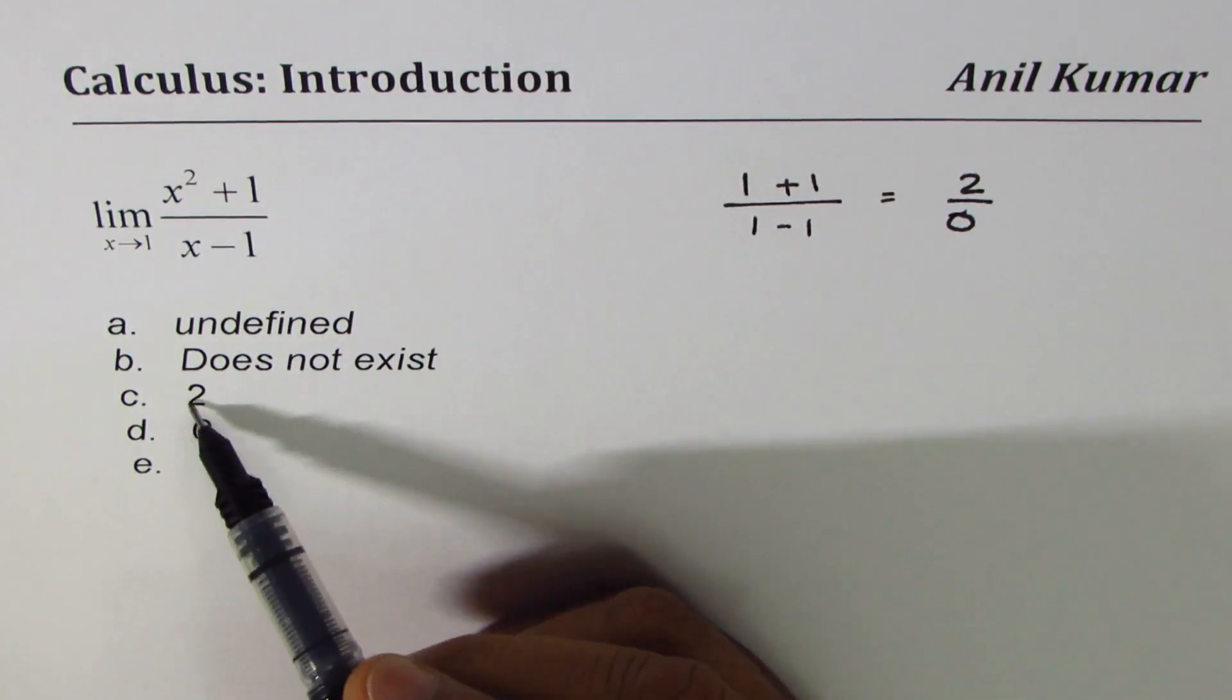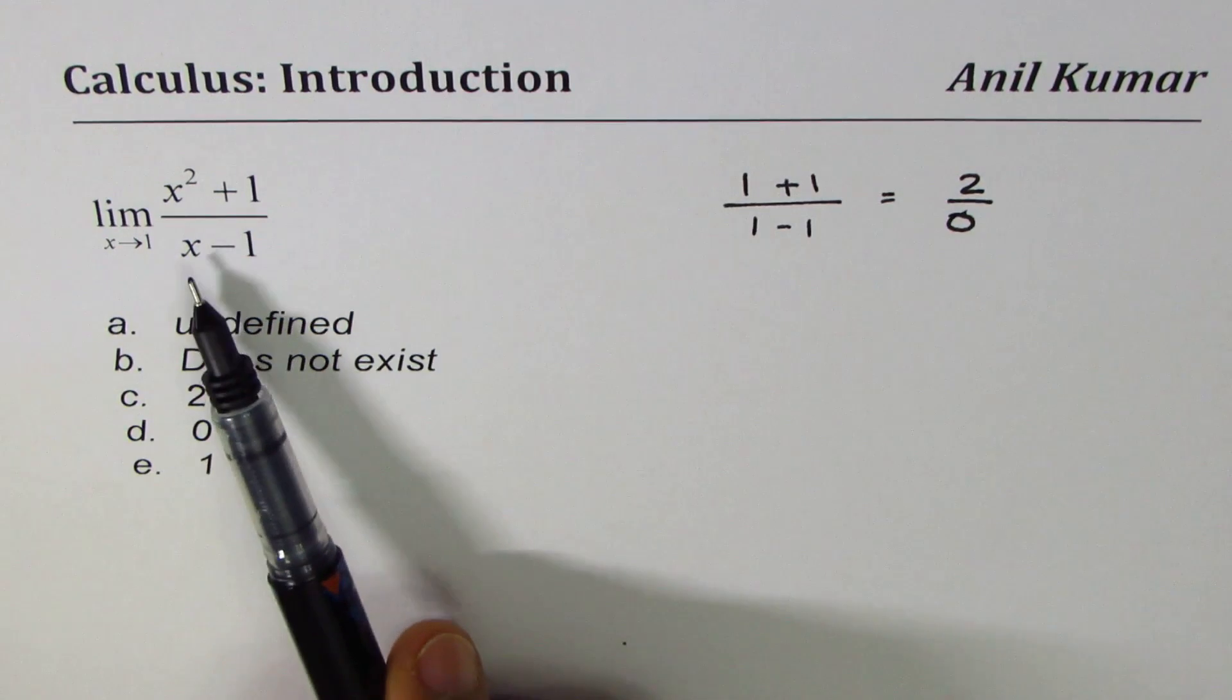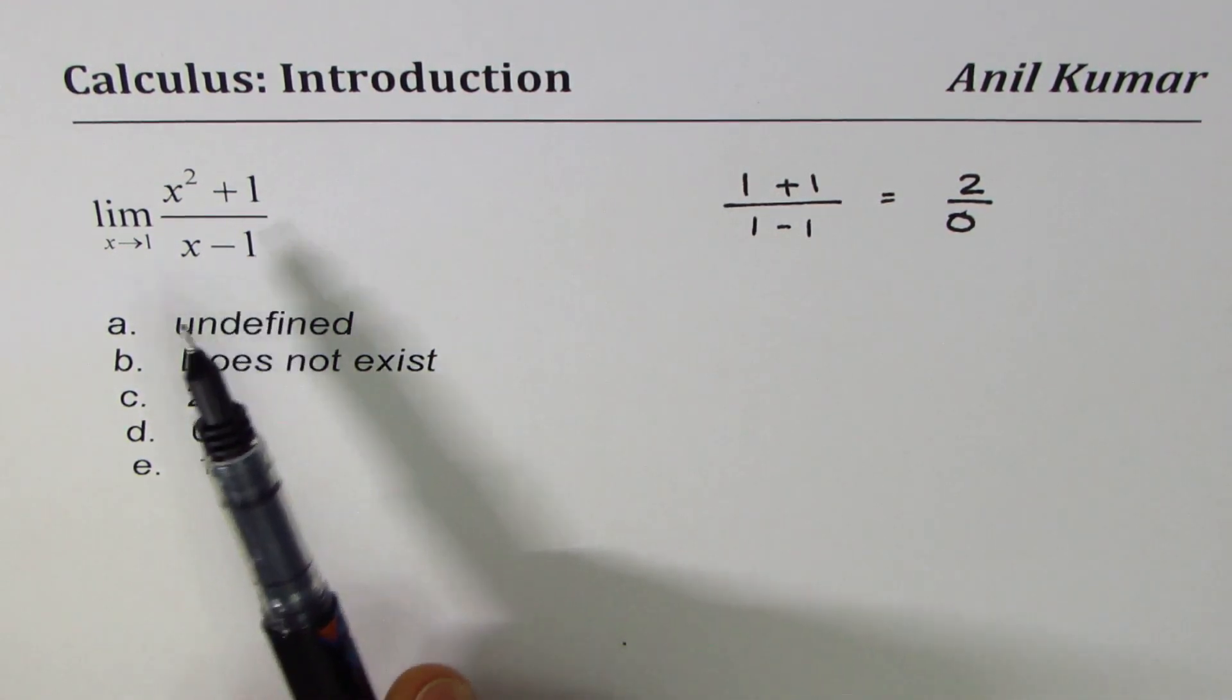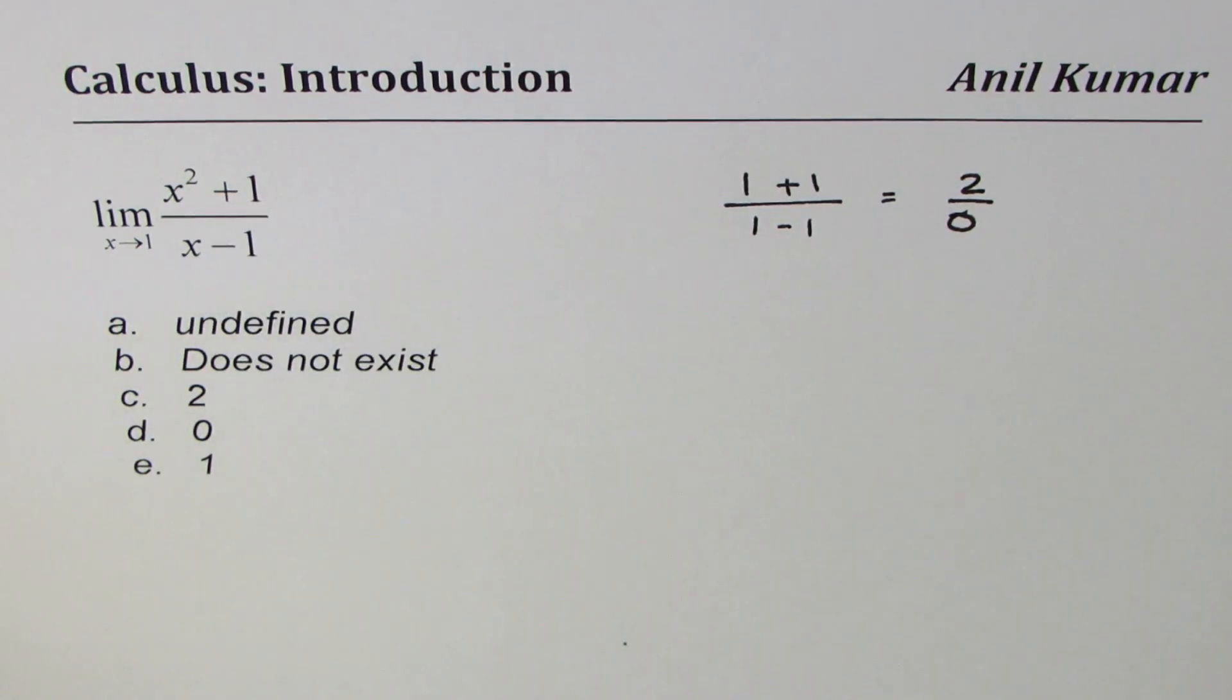So these options are not there, we don't really have a limit here at x equals to 1, right? In fact, there's a vertical asymptote at x equals to 1. This is x squared plus 1, not minus. So it doesn't really get cancelled.